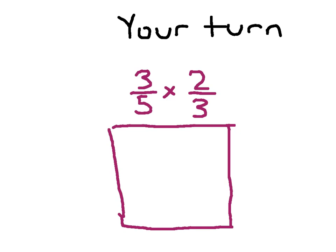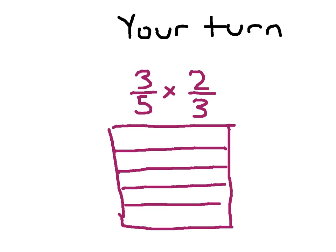Here we have 3 fifths times 2 thirds. To divide into 5 parts, we draw 4 lines — giving us 1 fifth, 2 fifths, 3 fifths, 4 fifths, and 5 fifths. The other fraction will be drawn vertically. If you don't have colors, you can shade one direction for one fraction and the other direction for the other. Go ahead and hit pause and do your work.